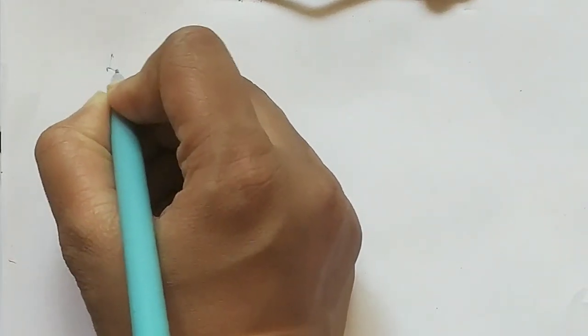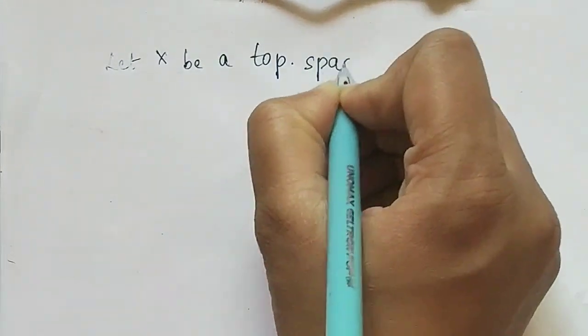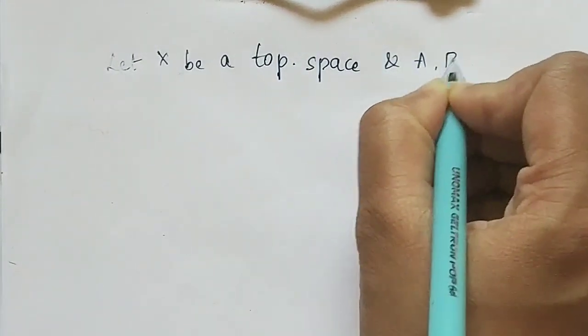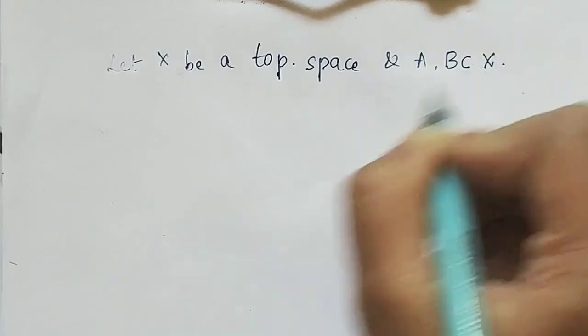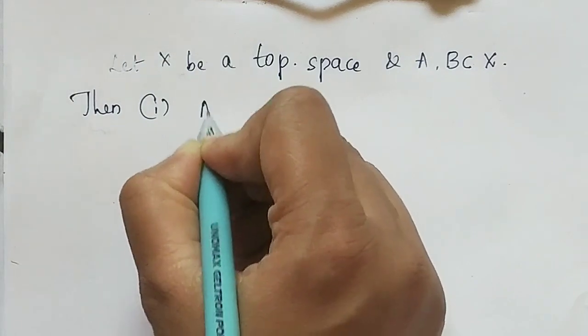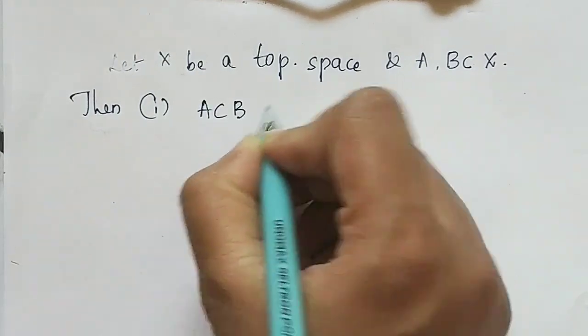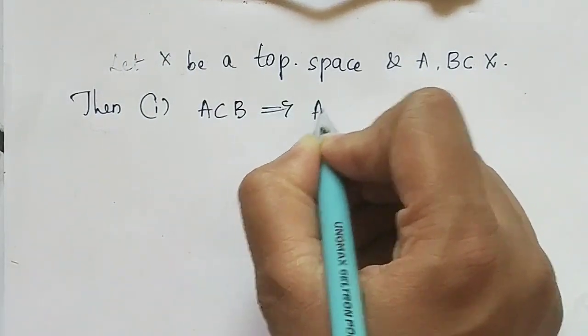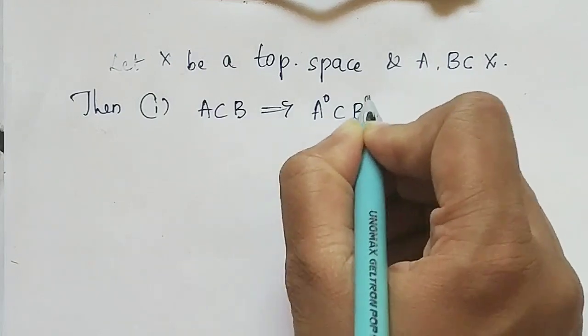Hello everyone. In today's class let us learn about some important concepts of interior of a set on the topic topological spaces. Let's consider a topological space capital X, and two subsets A and B. Then if A is a subset of B, this implies A interior will be a subset of B interior.